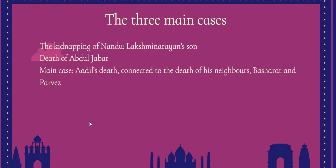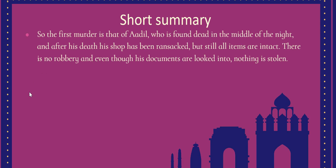The novel deals with three main cases. The first is the kidnapping of Nandu, the son of Lakshmi Narayan, who has been receiving threats that his son will be kidnapped. The second case solved by Muzaffar Jung is the death of Abdul Jabbar. The main case involves the deaths of Adil, and his neighbors Basharat and Parvez. I'll give a short plot overview of how the novel begins.